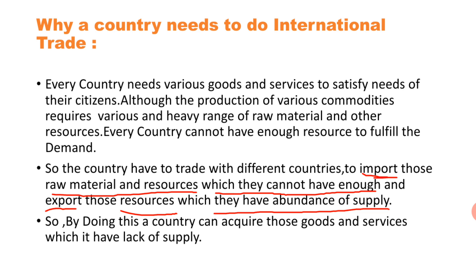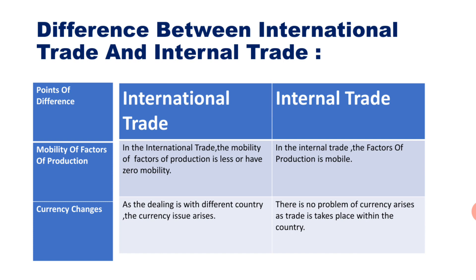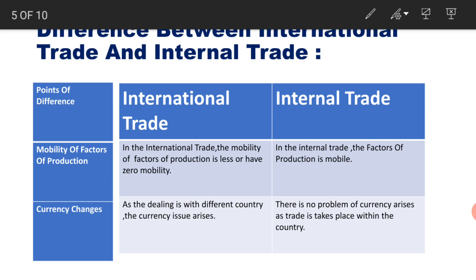Now we go to the next slide: difference between international trade and internal trade. In this video our main point is on international trade, but before fully understanding international trade we should also have some idea of internal trade. The first difference point is mobility of factors: the mobility of factors of production is less or near zero in international trade, while in internal trade factors of production are mobile.